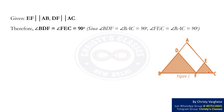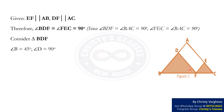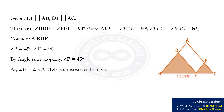This implies that angle BDF equals angle FEC, which equals 90 degrees. Consider triangle BDF: angle B equals 45 degrees and angle D equals 90 degrees. By the angle sum property, angle F equals 45 degrees. As angle B equals angle F, triangle BDF is an isosceles triangle, giving us BD equals DF.